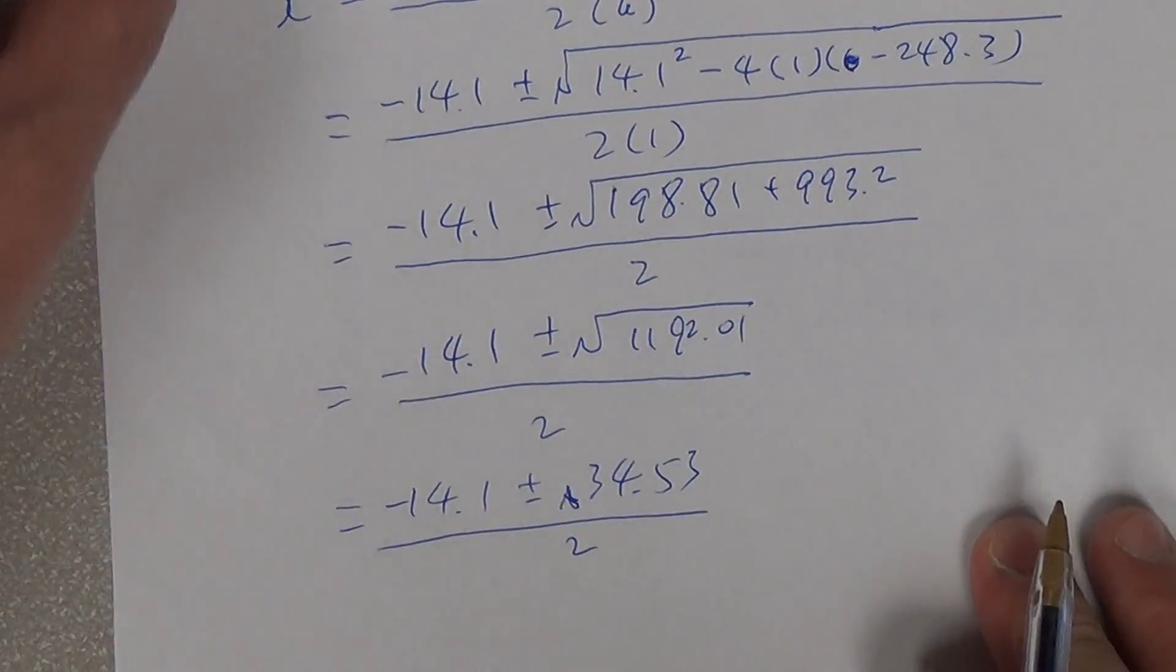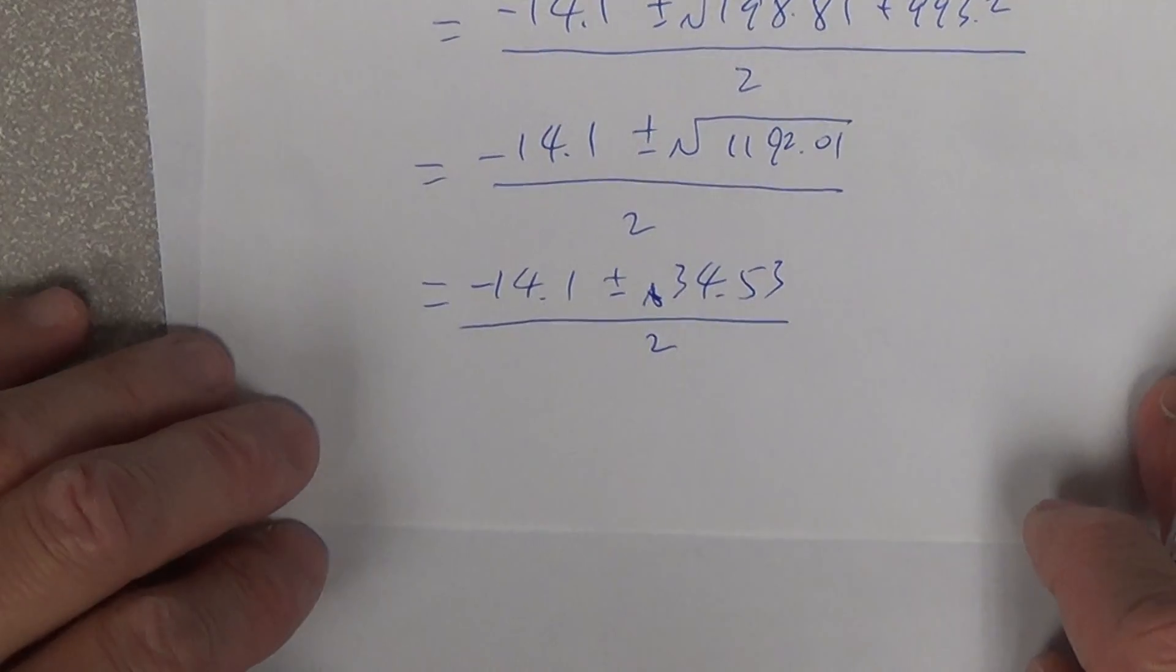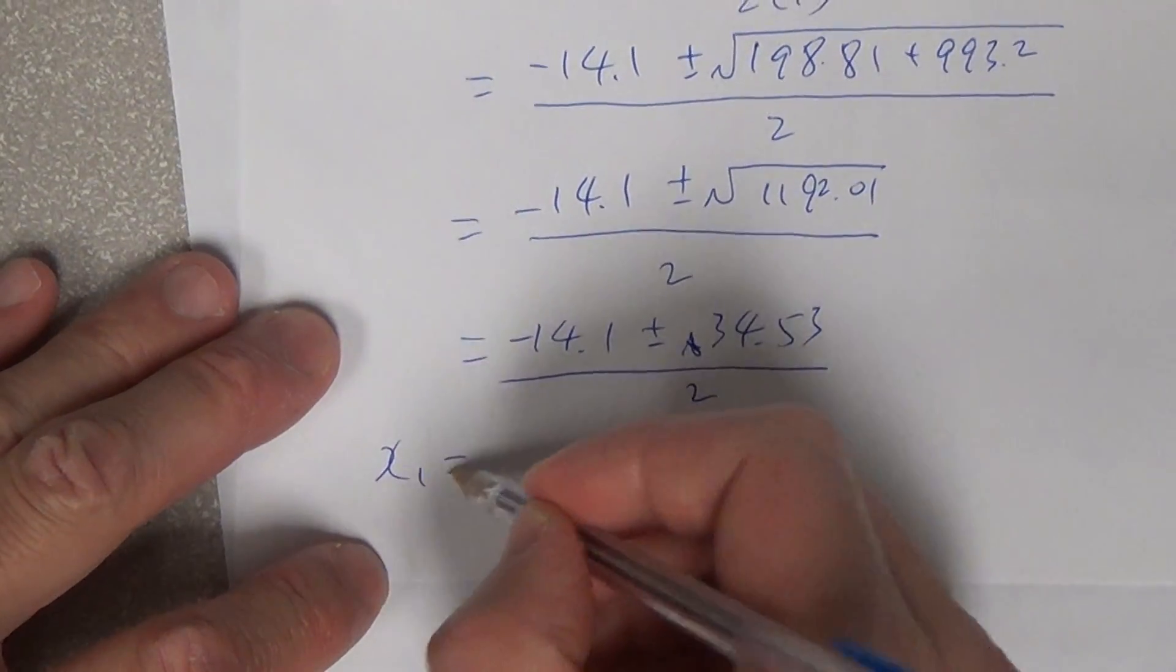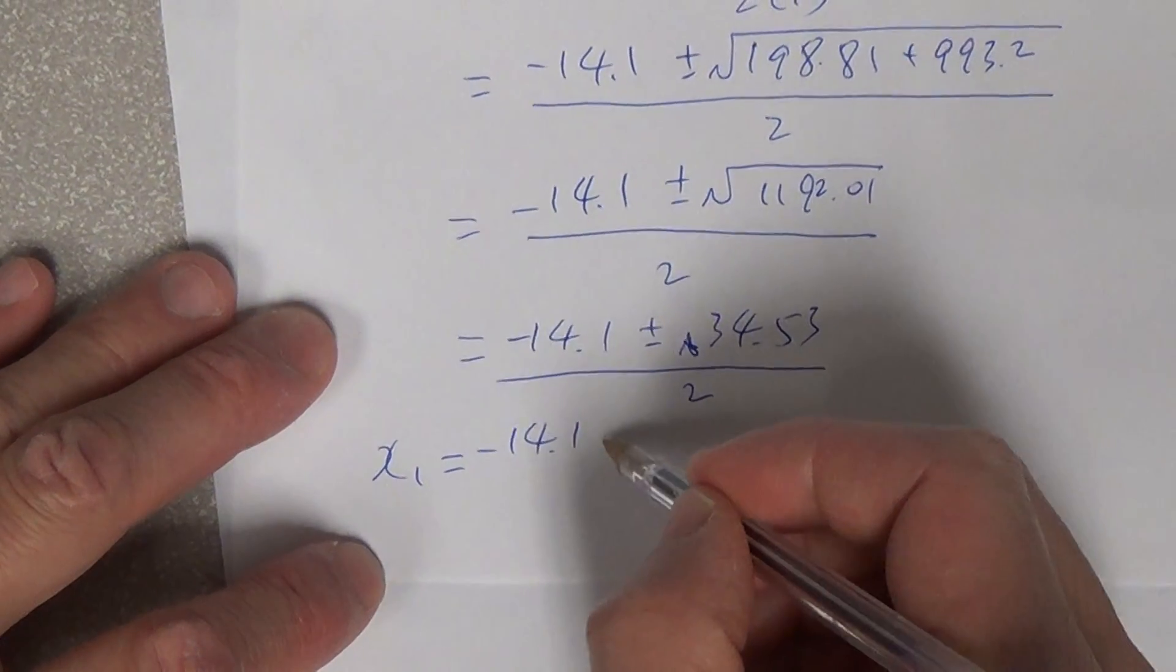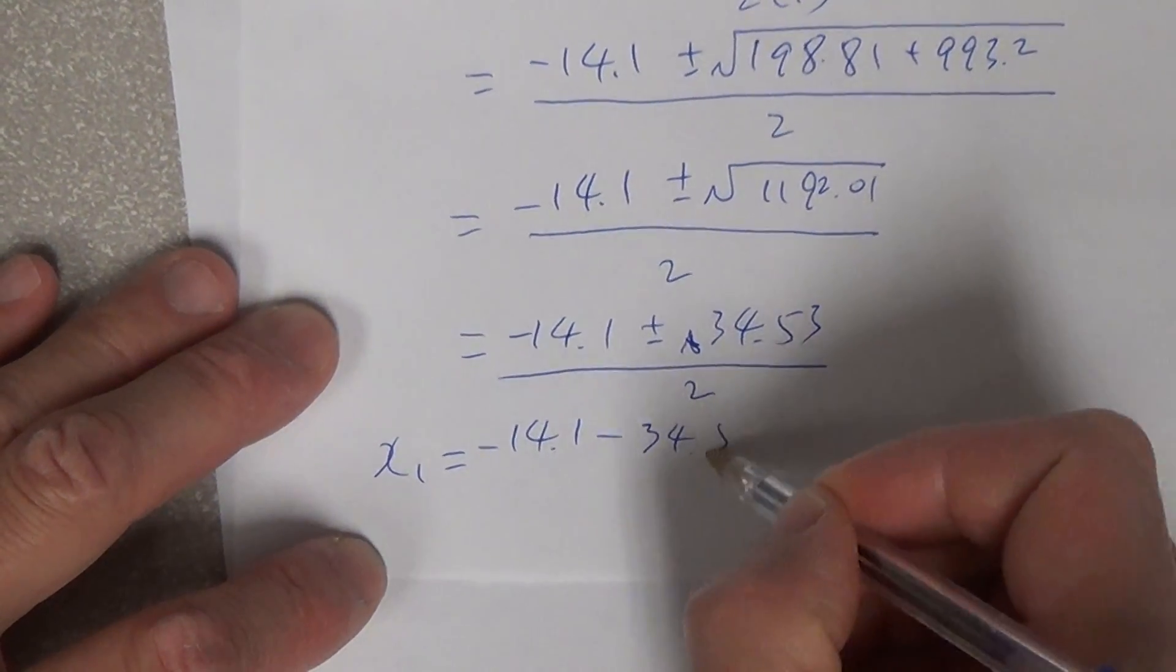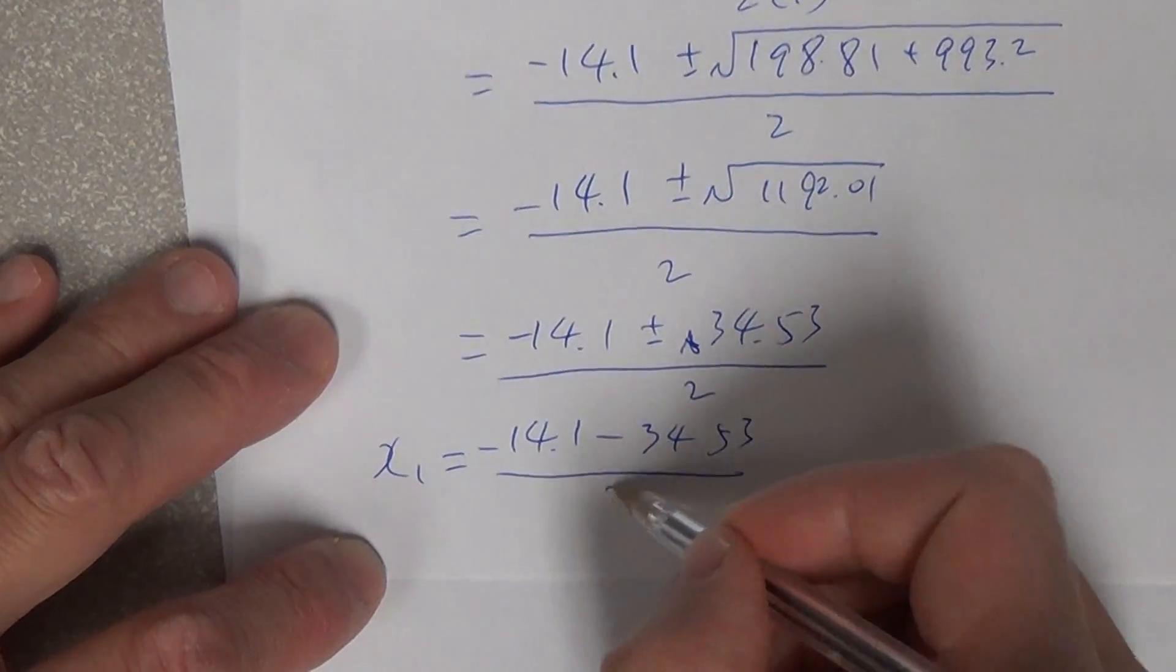So taking one number at one time, let's say you get x1 equals negative 14.1 minus, doesn't make sense because the change x cannot be negative.